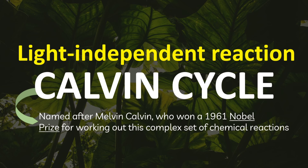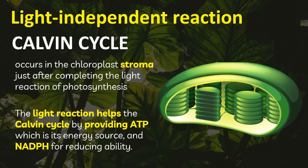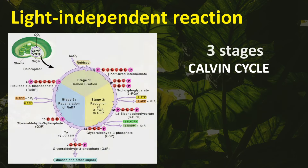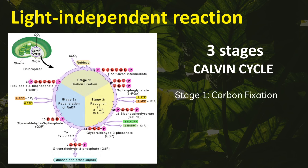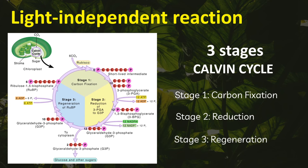The Calvin Cycle is named after Melvin Calvin, who won the 1961 Nobel Prize for working out this complex set of chemical reactions. The Calvin Cycle occurs in the chloroplast stroma, just after completing the light reaction of photosynthesis. The light reaction helps the Calvin Cycle by providing ATP as its source of energy and NADPH for reducing ability. There are three stages of the Calvin Cycle: stage one is carbon fixation, stage two is reduction, and stage three is regeneration.